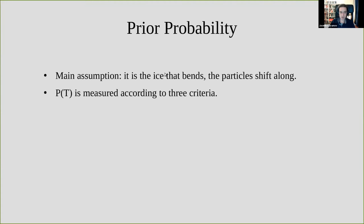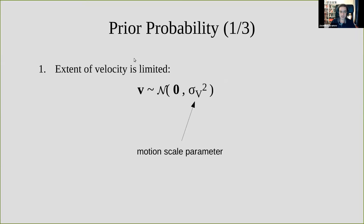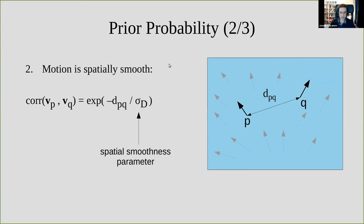It is the prior probability that establishes the connections between different particle positions in different frames. The prior is built around the assumption that it is really the ice that moves, deforms, and bends, and the particles just swim along. Based on this, we construct the prior using three criteria. First, the overall extent of velocity is limited — the velocity of any particle follows a normal distribution around zero. Second, the motion is spatially smooth: the motion at two different points in the ice is correlated, and that correlation decays exponentially over distance using the spatial smoothness parameter σ_d.